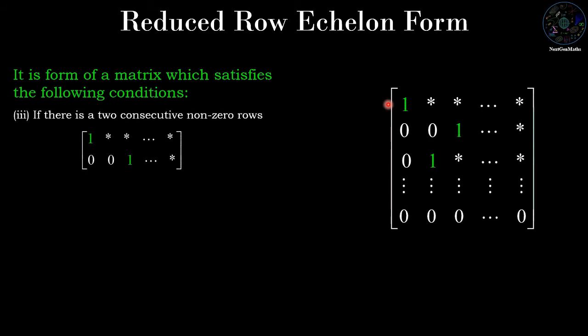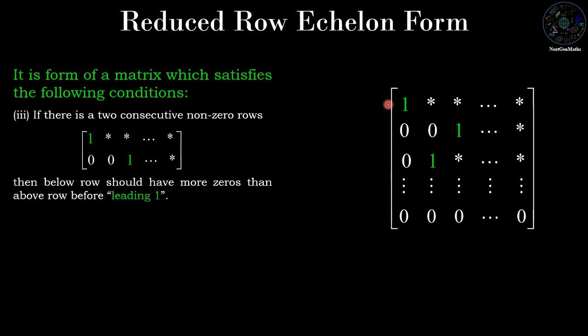Third condition: if there are two consecutive nonzero rows, then the below row should have more zeros than the above row before the leading one. So we have three consecutive nonzero rows. In the first row there are zero zeros before the leading one, in the second row there are two zeros, and in the third row there is one zero before the leading one.